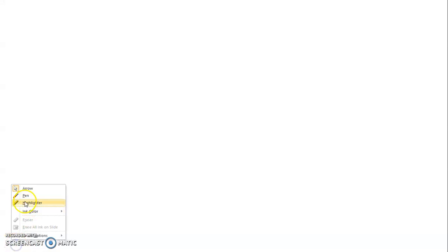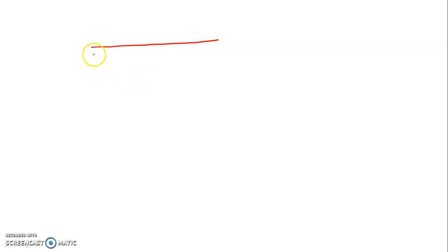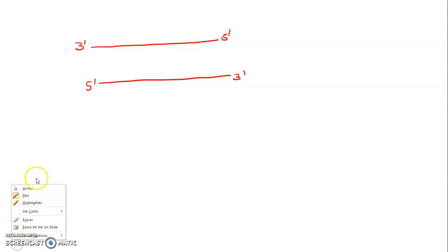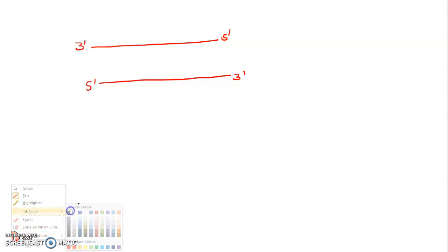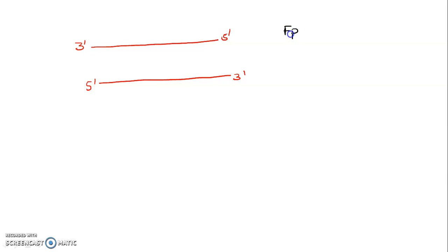Another question came on primer designing. During DNA denaturation, DNA is denatured and you get two separate strands — one 3' to 5' and another 5' to 3'. During the PCR reaction, two types of primers are used: the forward primer (Fp) and the reverse primer (Rp). The forward primer is written 5' to 3', and the reverse primer is also written 5' to 3'.